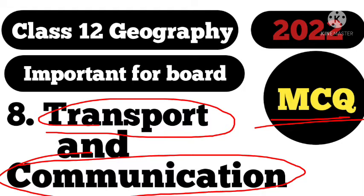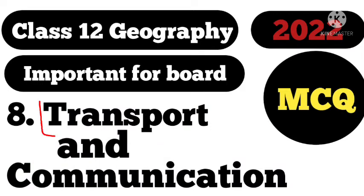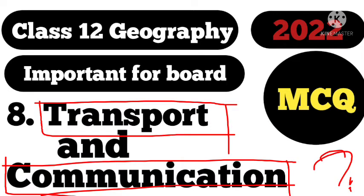Let me tell you about the chapter Transport and Communication. Transport and Communication is the way for us humans to overcome the barriers of physical distance — the means that help us overcome distance regularly. Transport generally involves the movement of people or goods from one place to another via roadways, railways, etc. Communication, on the other hand, means passing of information or data from one source to another.